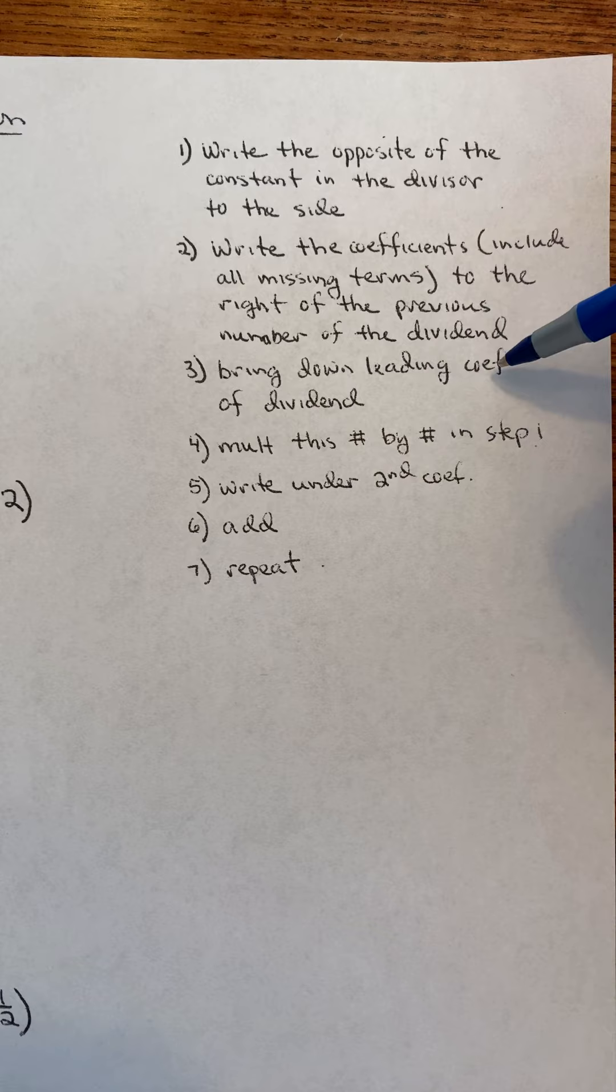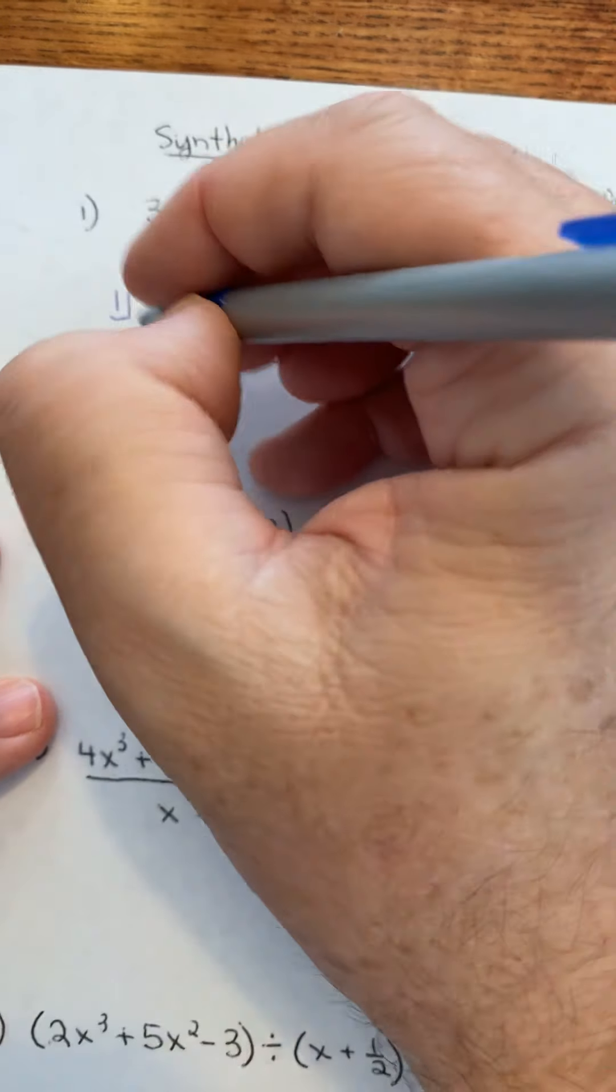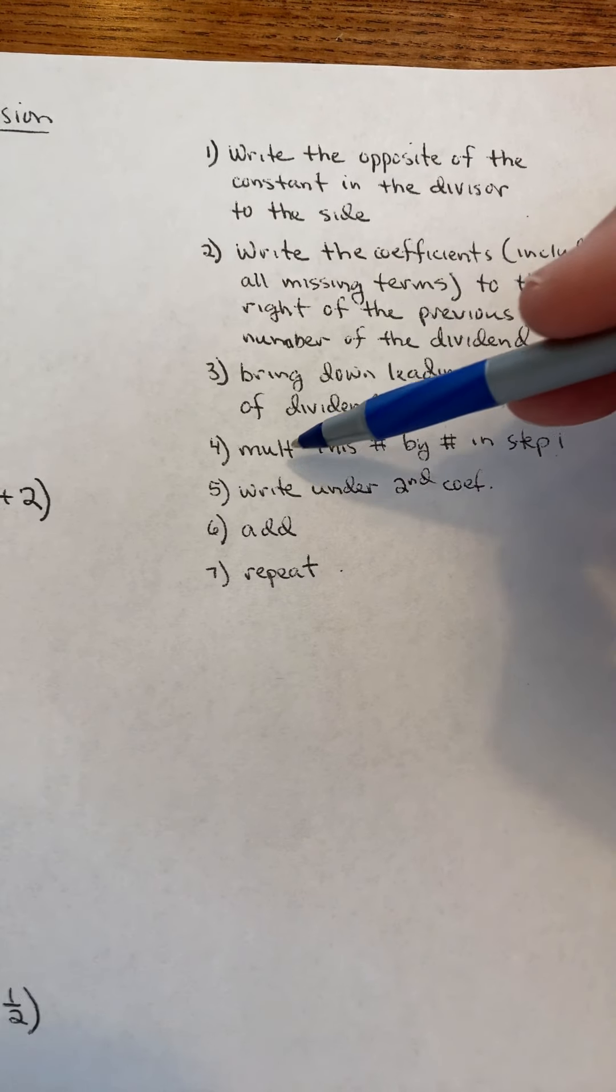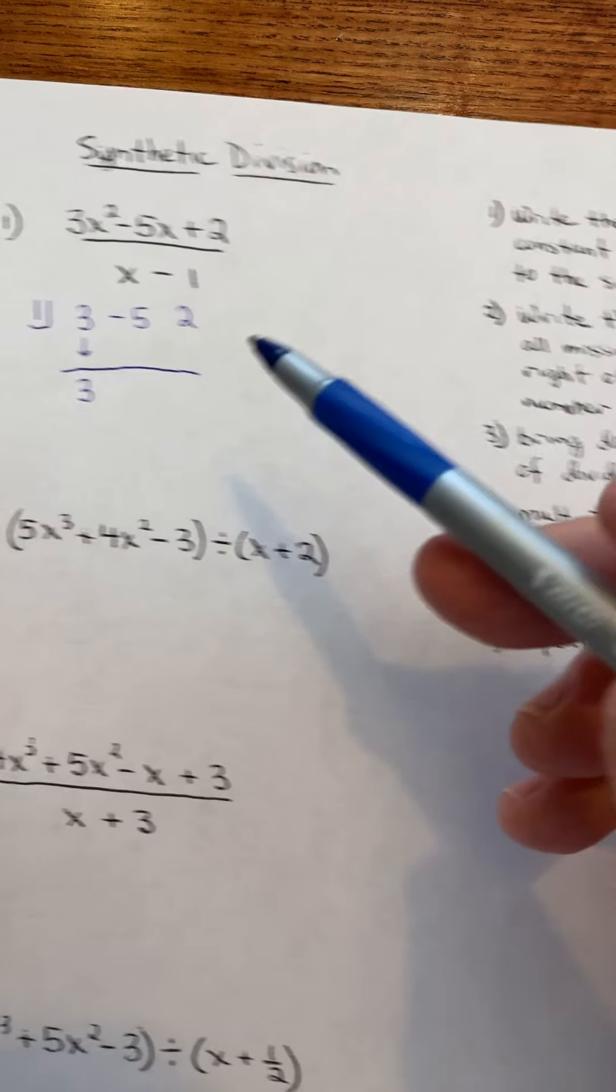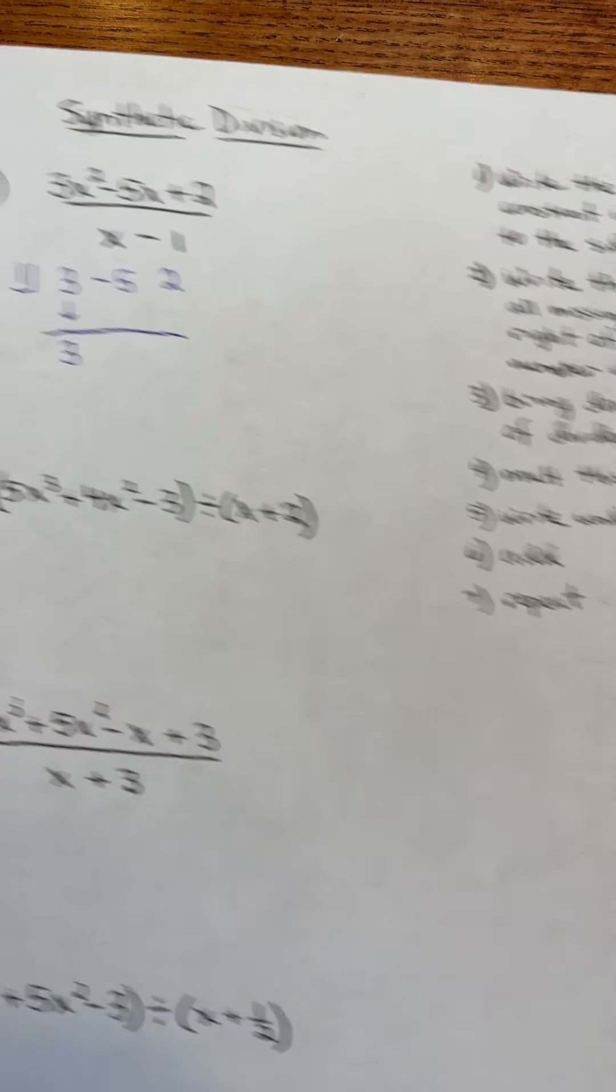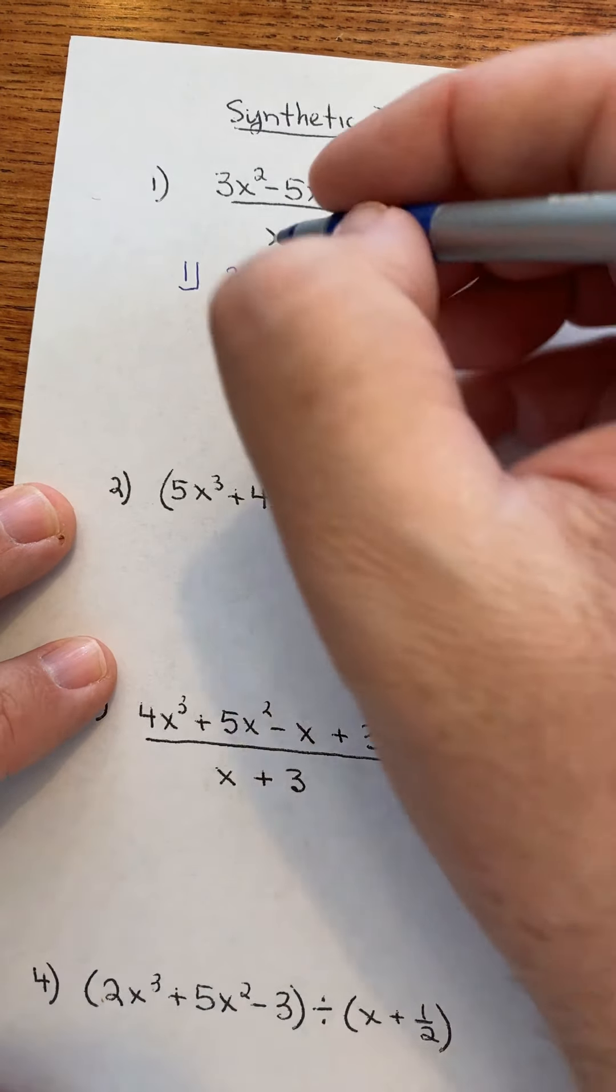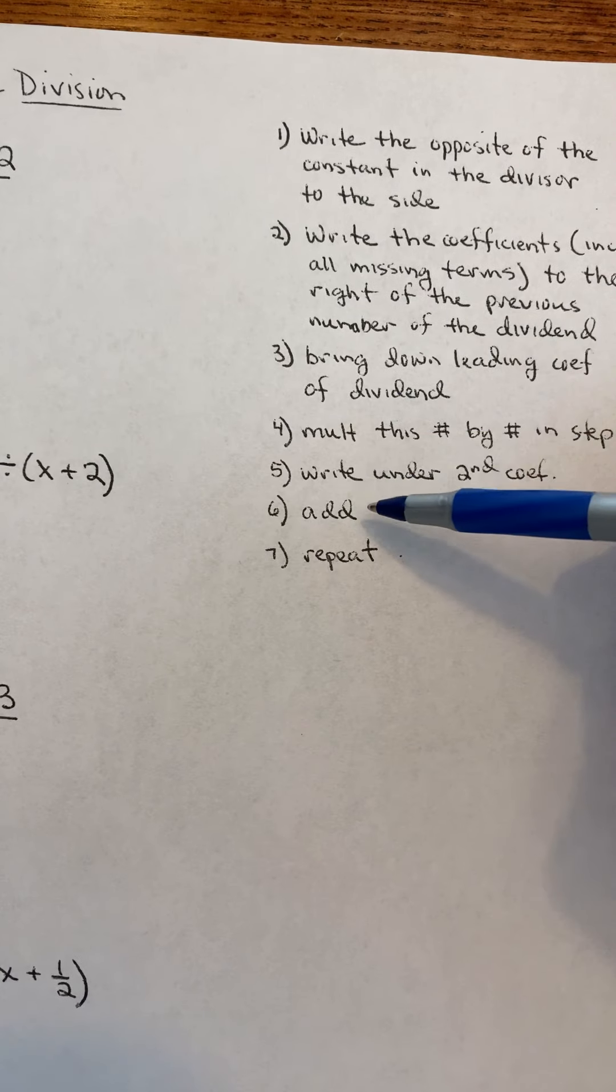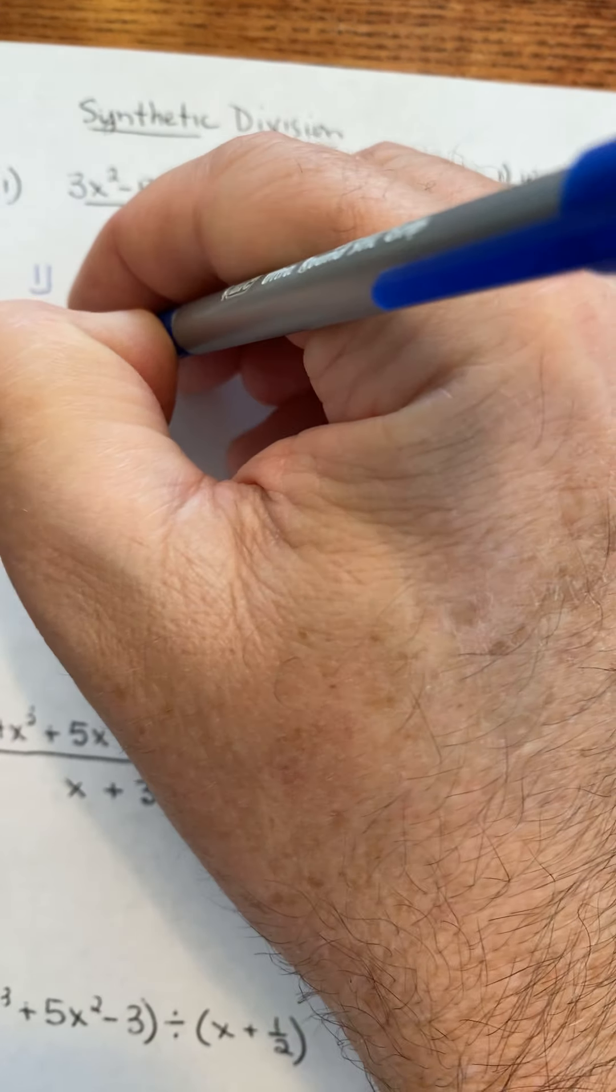Bring down the leading coefficient of the dividend. That's just this first term, so bring it down. Multiply this number by the number in step 1. Step 1 was the number we put right here. So 1 times 3, right underneath the second coefficient. 1 times 3 is 3. Put it underneath there. The next step says to add. So negative 5 plus 3 is a negative 2.